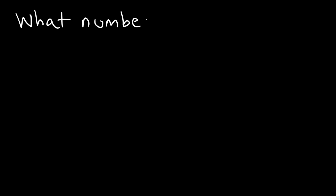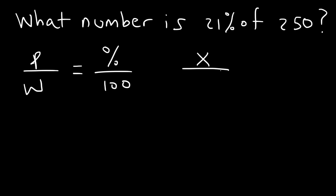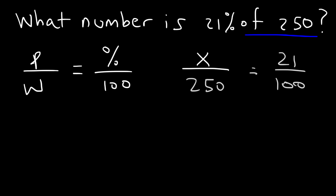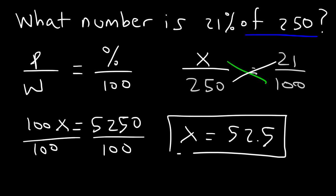Here's another example: What number is 21% of 250? We're looking for the part again, so let's replace P with X. The whole is 250, the percentage is 21%. Cross-multiplying gives us 100X equals 250 times 21, which is 5250. Dividing both sides by 100, we get 52.5. So 52.5 is 21% of 250. By the way, 50 is 20% of 250, since 20% is one fifth.